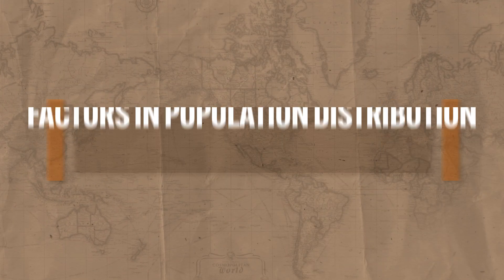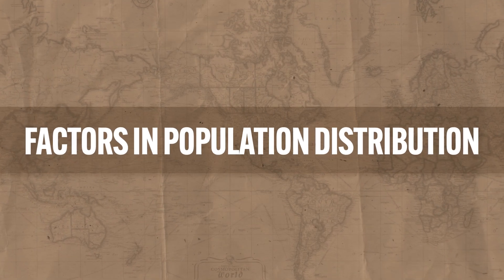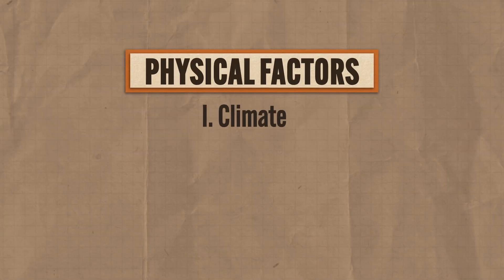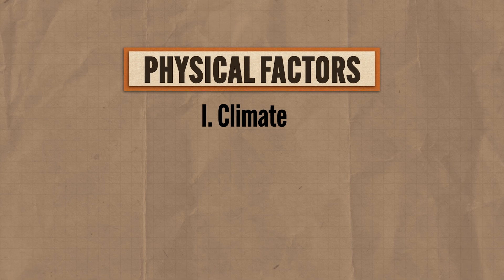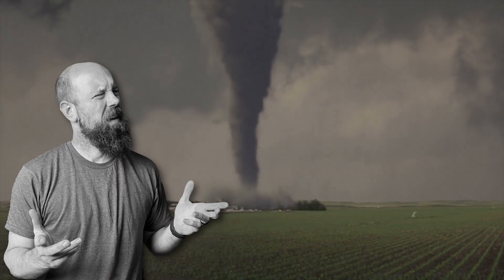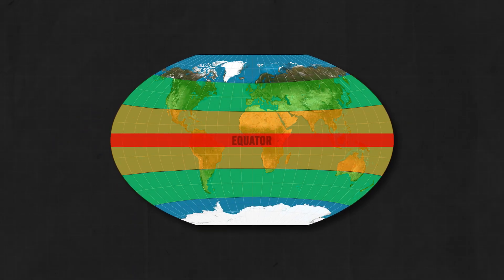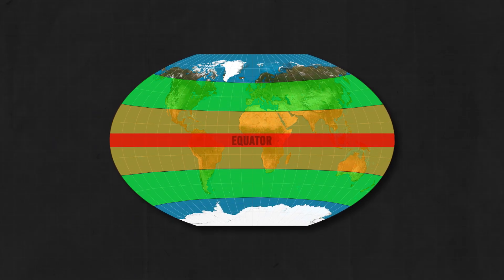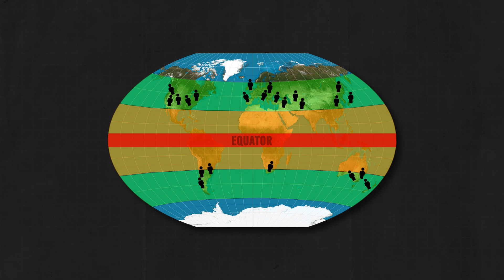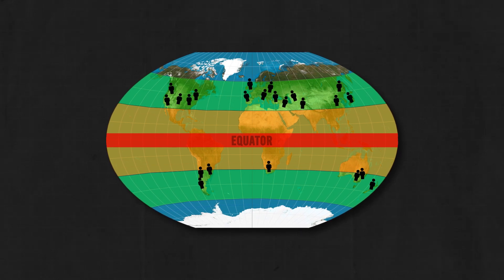There are basically two factors that determine how populations are distributed. First, you've got physical factors. Under this heading, climate plays a big role in where people live. Climate and weather are not the same thing — weather is what's happening today, like it's sunny, raining, or there's a tornado. But climate describes weather patterns over long periods of time. In terms of population distribution, humans love the mid-latitudes between 30 and 60 degrees from the equator because that's where climate is milder with a decent amount of precipitation.